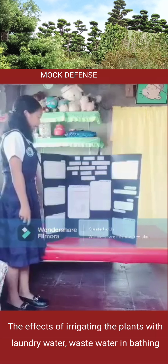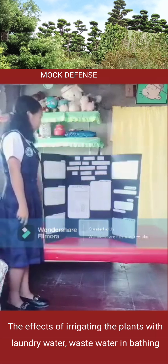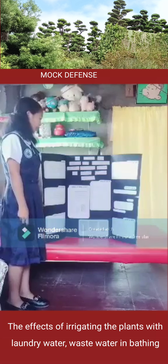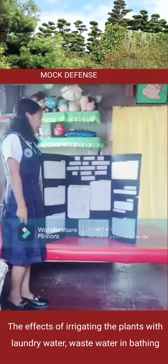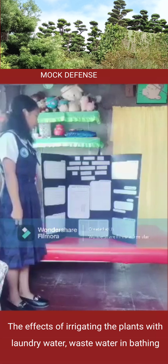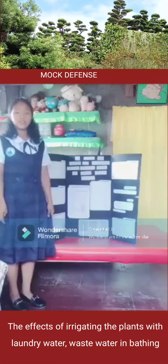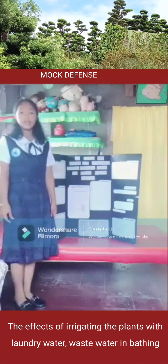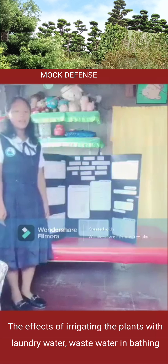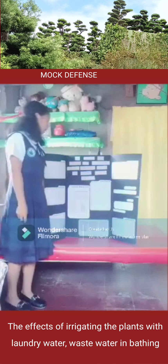What I first did is prepare the materials. I took nine rough horsetail plants and placed three of them on each tray. I labeled the first set of plants laundry water, Set A. I labeled the second set of plants wastewater in bathing, Set B. And I labeled the third set of plants tap water, Set C.